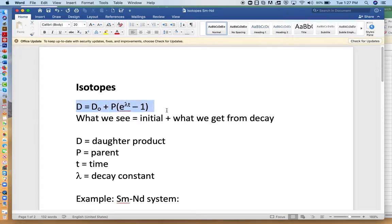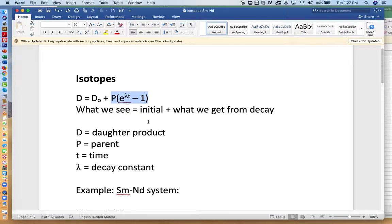We have the same equation we saw before. So the daughter is equal to initial plus whatever we get from decay of the parent. So it's the same as what we looked at when we studied the strontium, Rubidium strontium system.